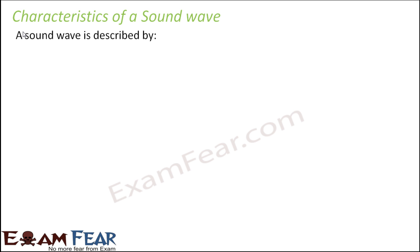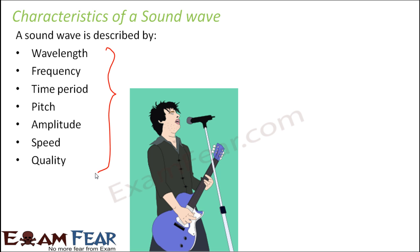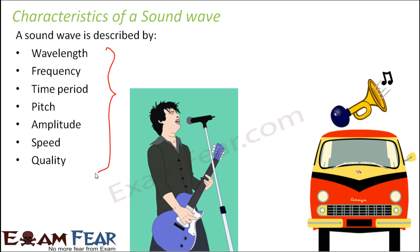Every sound wave is described by parameters like wavelength, frequency, time period, pitch, amplitude, speed, and quality. These are the characteristics of a sound wave. Whenever we say that two sounds are different, those two sounds must differ in one or more of these characteristics. For example, the sound of a guitar and the sound of a vehicle horn are very different because they vary in wavelength, frequency, time period, or pitch.